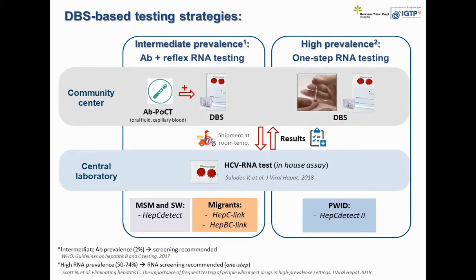How do we use this test? In intermediate prevalence populations attending community centers, we recommend first using an antibody rapid test — for instance, in oral fluid or capillary blood — and if positive, we immediately collect the DBS sample. In high prevalence populations, such as people who inject drugs where prevalence may reach 90%, we do one-step RNA testing directly — collecting the DBS sample without an antibody test first. In both cases, we ship the samples at room temperature to the laboratory for HCV RNA testing, and results are given back to the community center.